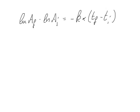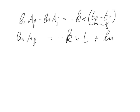We can rearrange this equation: ln R_final equals minus k times T — because T_initial is usually set to zero — plus ln R_initial. This equation is the equation for a straight line: y equals minus mx plus c.